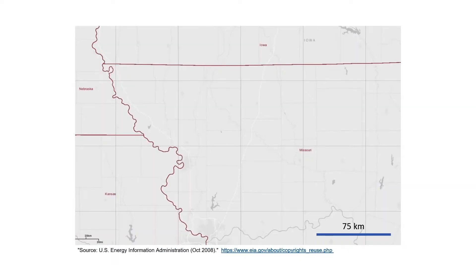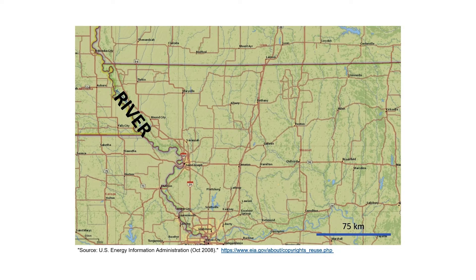This part of the U.S. is where four states come together: Nebraska, Iowa, Kansas, and Missouri. You can see from the scale bar down there that this is not a very large geographical area. We have the Missouri River running down on the left side of the map, and we have two major metropolitan areas, Kansas City and St. Joseph. There are also a number of small towns in the map, and this is mainly a farming area.